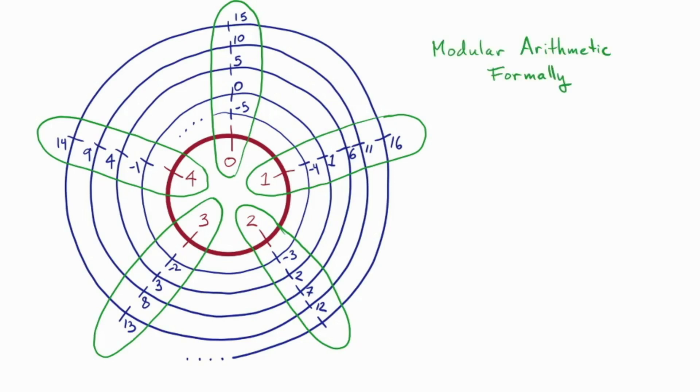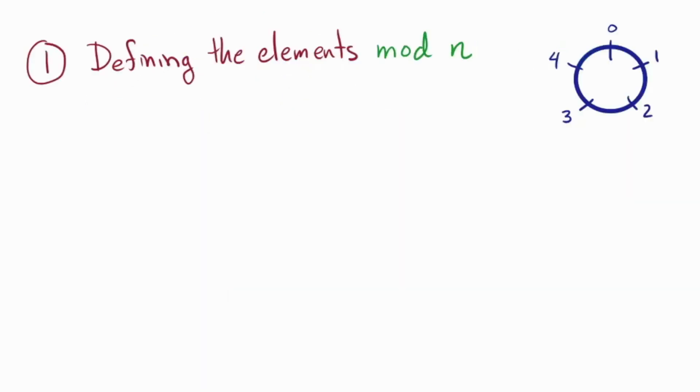Now, our goal is to build modular arithmetic formally. For that, we will want to do three things. We will want to define the elements or numbers we are using, define their operations, addition and multiplication, and prove that the operations are well-defined. The term well-defined means that the definitions we've given don't have any internal contradictions. We'll get to what this means in due time.